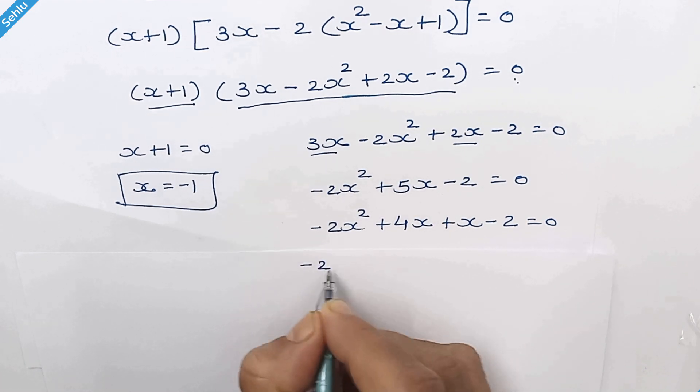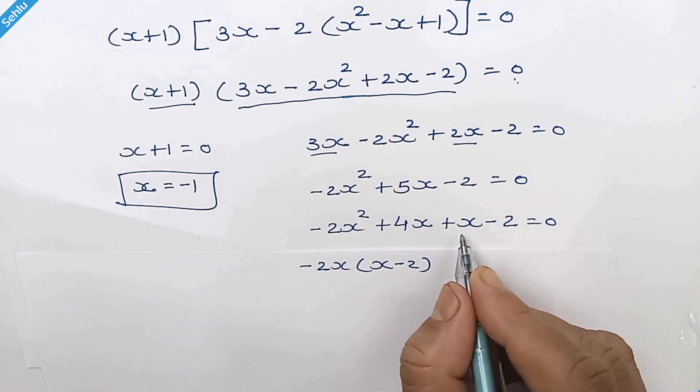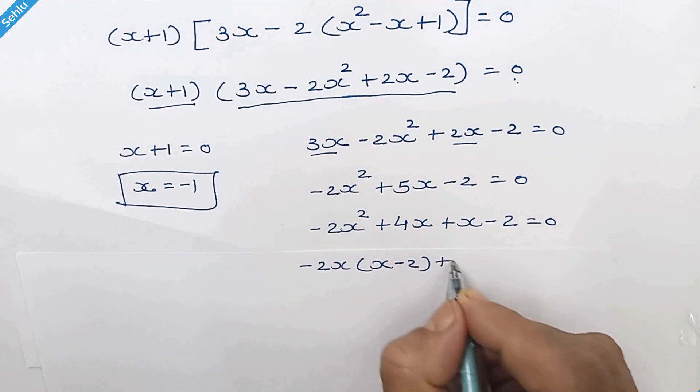Factor out negative 2x so it will be x minus 2 and here we can factor out 1.